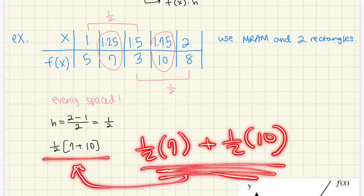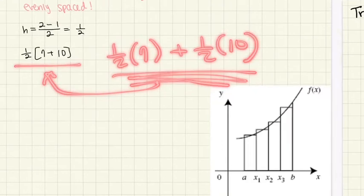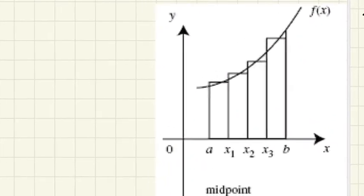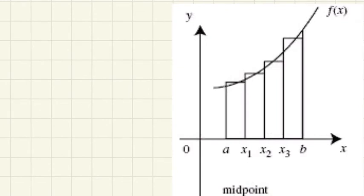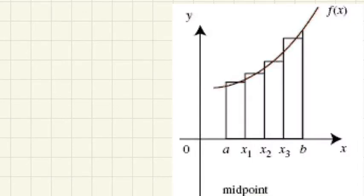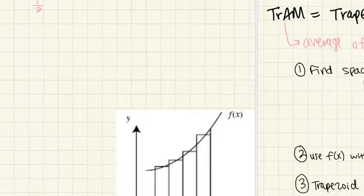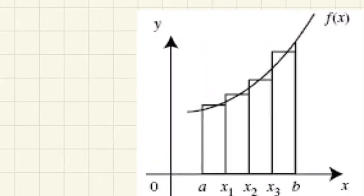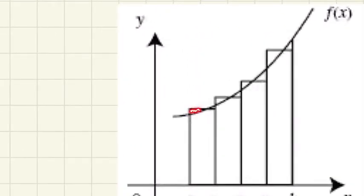Looking at the graph, you use the midpoint of each rectangle's width, where the curve passes through. MRAM is both an overestimate and an underestimate in different parts, as you can see from what's colored in the graph.